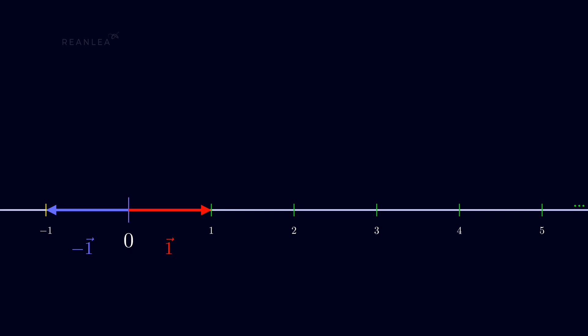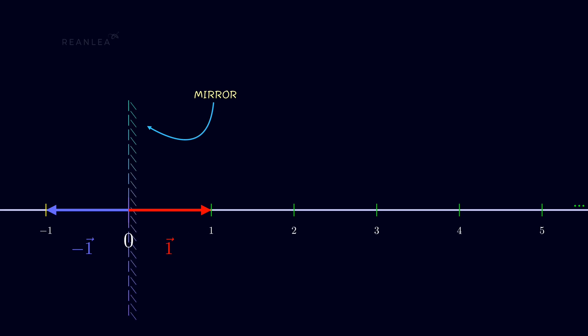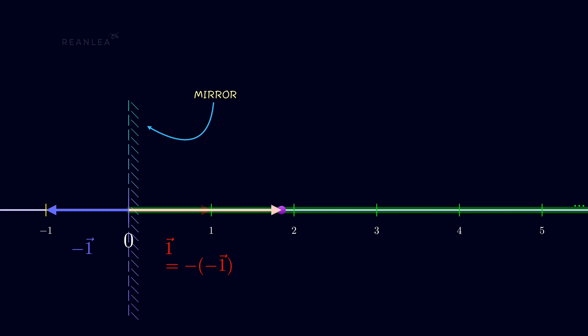If we consider the origin (0) to be the mirror, then the minus 1 vector becomes the reflection of vector 1 on that mirror, and vector 1 is the reflection of the minus 1 vector. That's why we can simply conclude that vector 1 is minus of minus 1 vector. Thus all points on the right side of the axis centered at the origin represent a vector emanating from the origin, with that point as its terminal point.